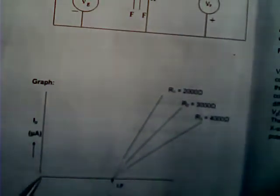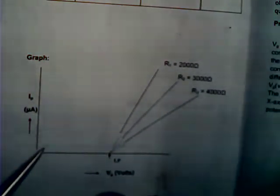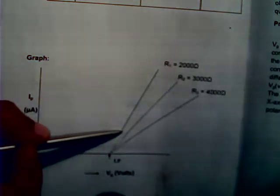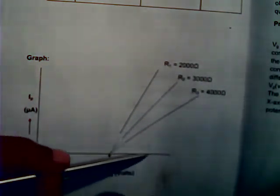You will notice that up to a certain value of Vg, there is no plate current generated. After this particular value of the potential is reached, then you will see that the plate current keeps on increasing as the voltage keeps on increasing.